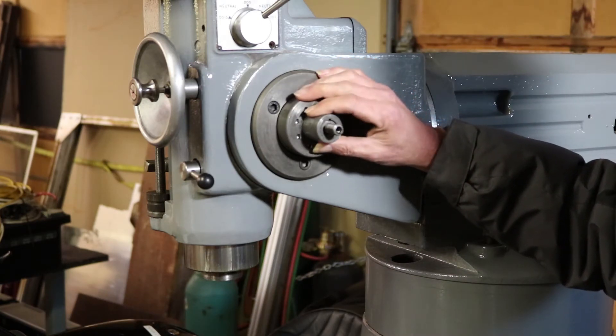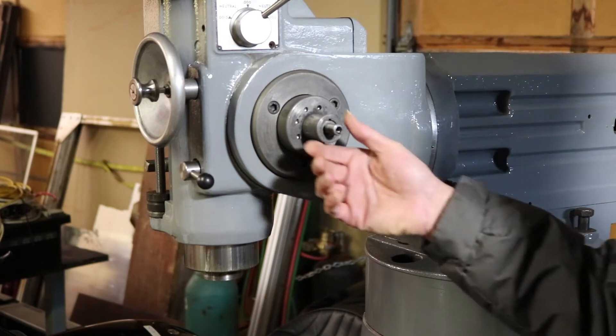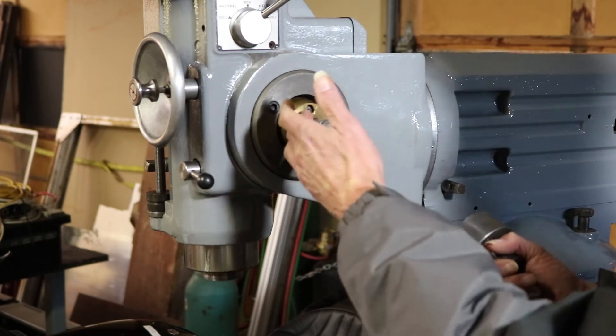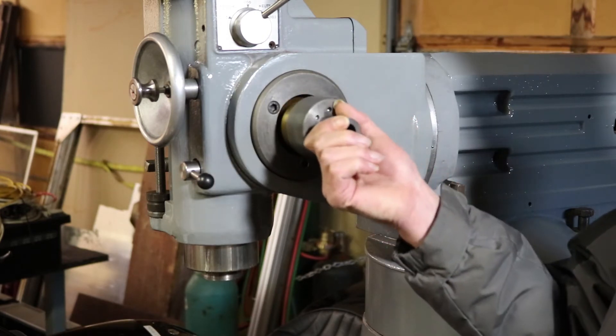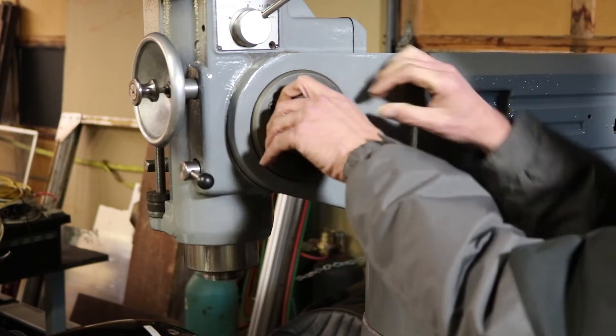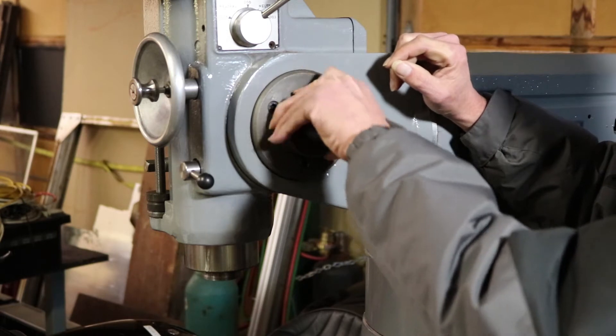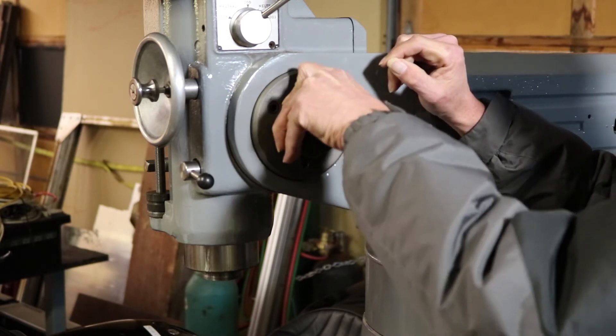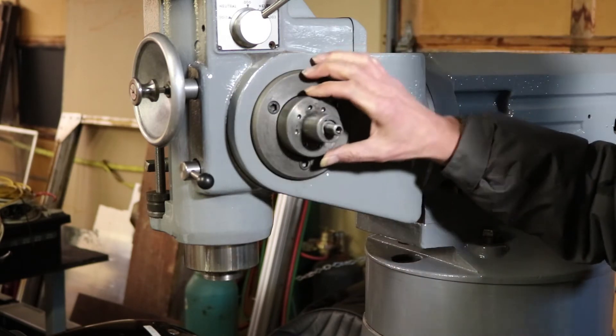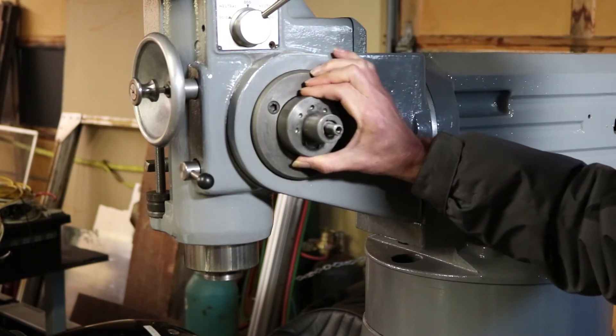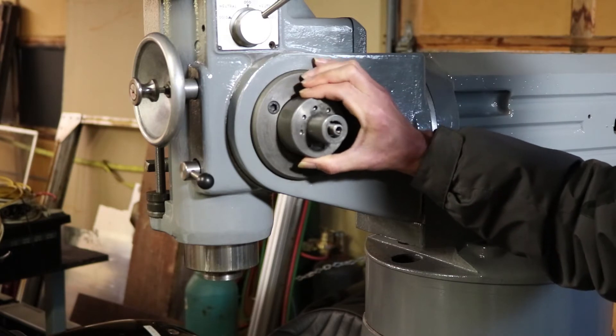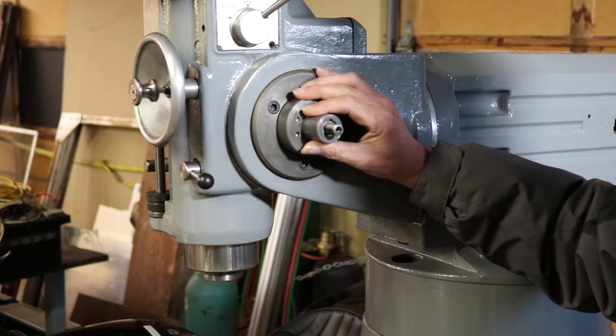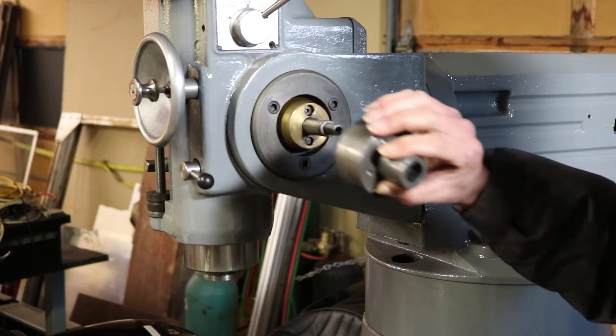When I did heat it up, it pulled right off the shaft. I think it was locked to the shaft. But the cone can also have quite a grip on it as well, because that's the clutch mechanism. Once I heated this thing up, this basically just pulled right off.